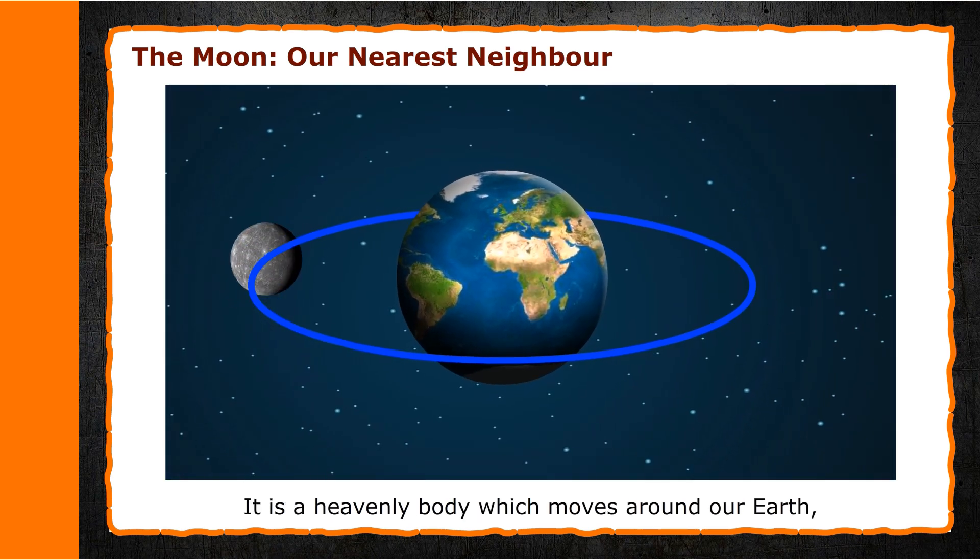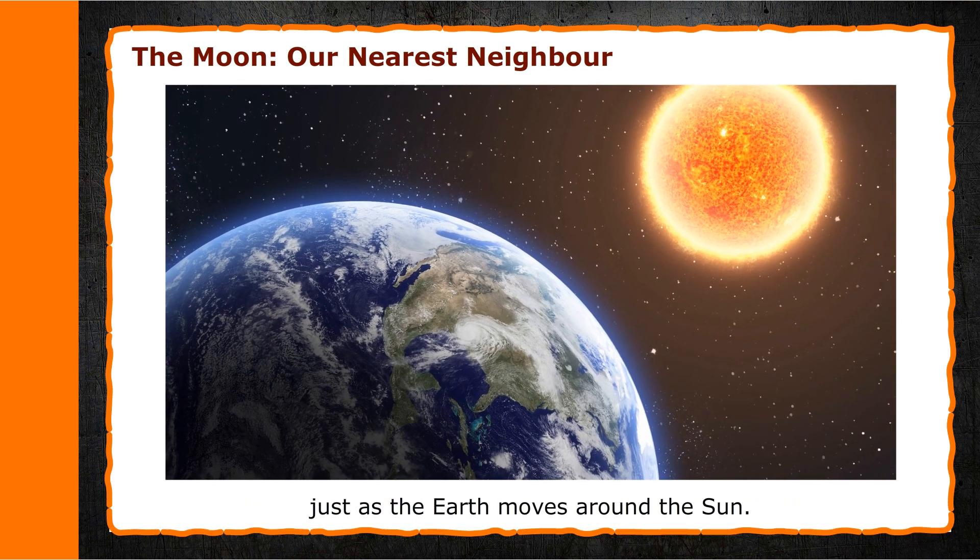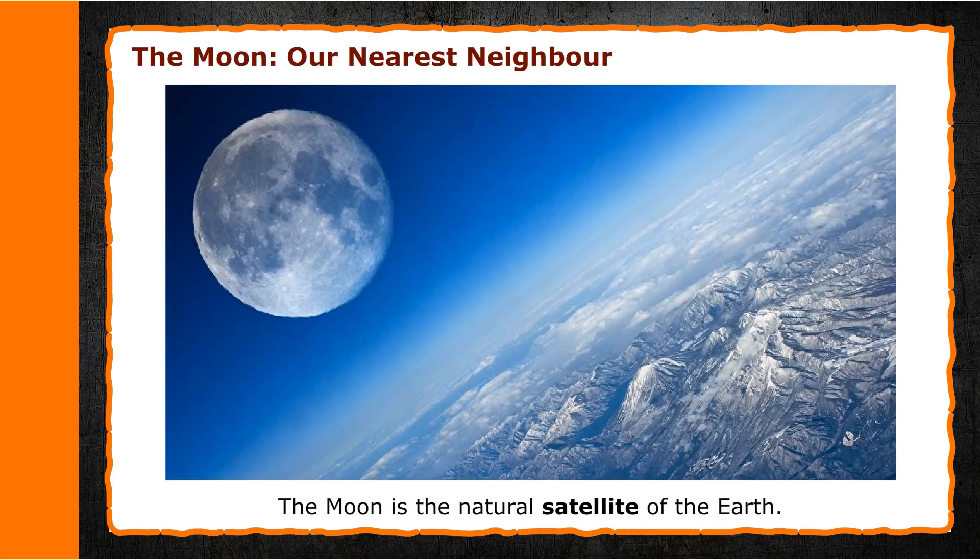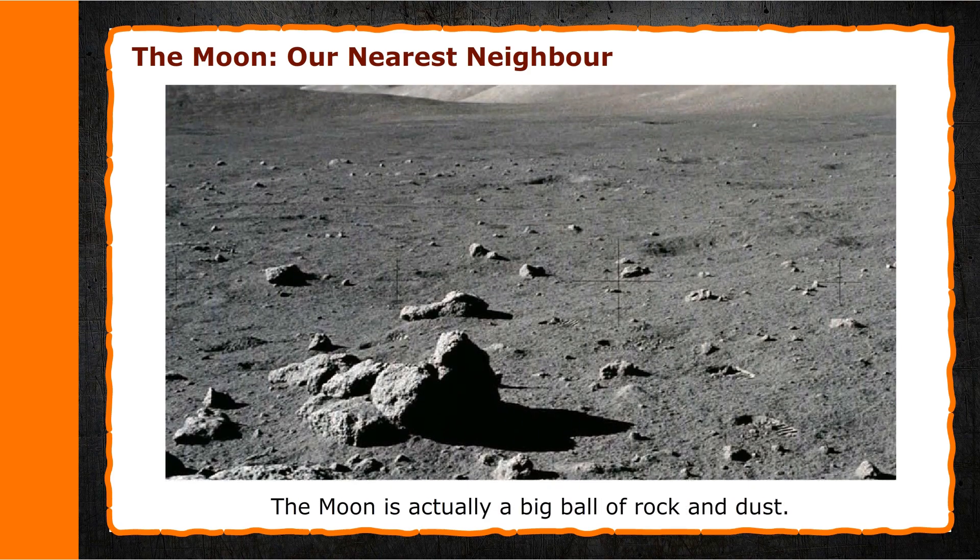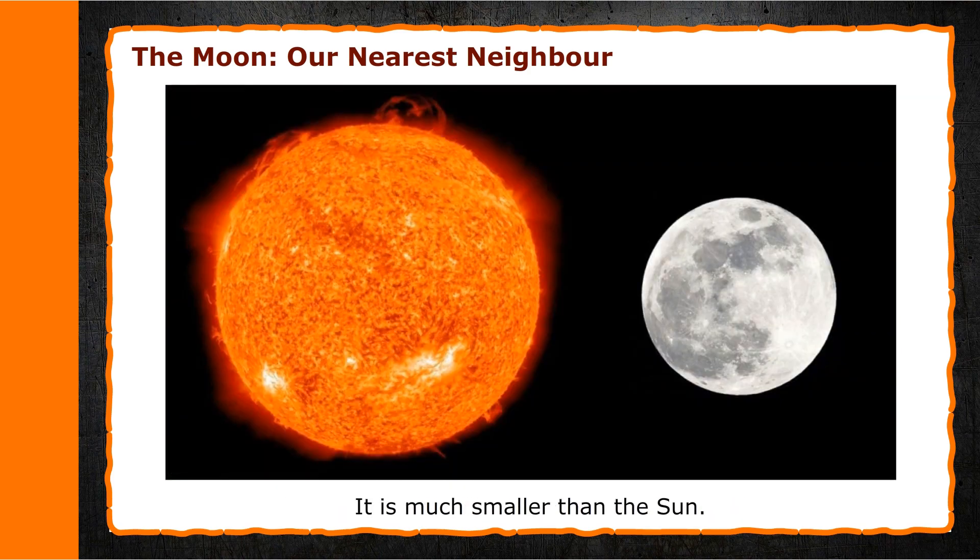The Moon is the natural satellite of the Earth. The Moon is actually a big ball of rock and dust. It is much smaller than the Sun.